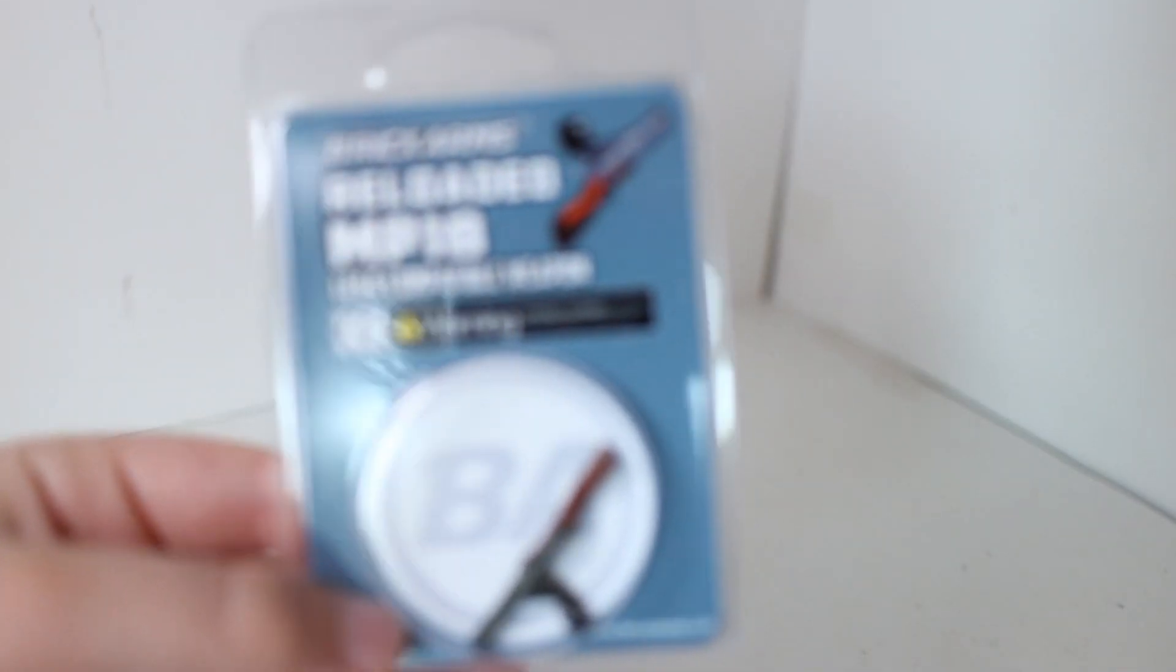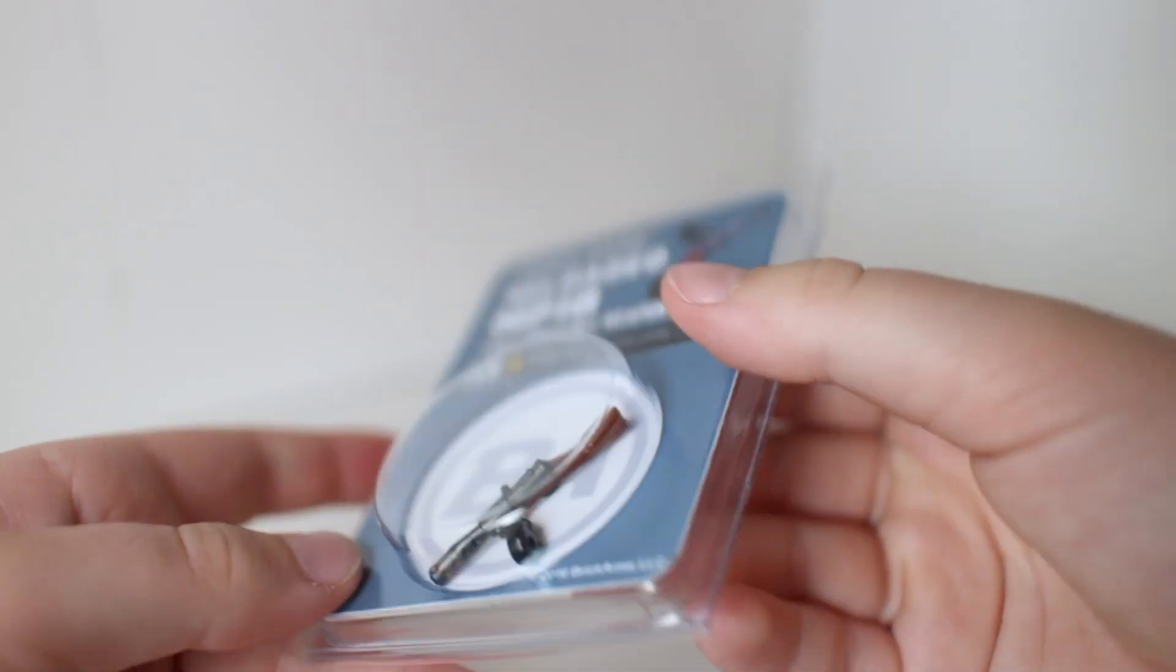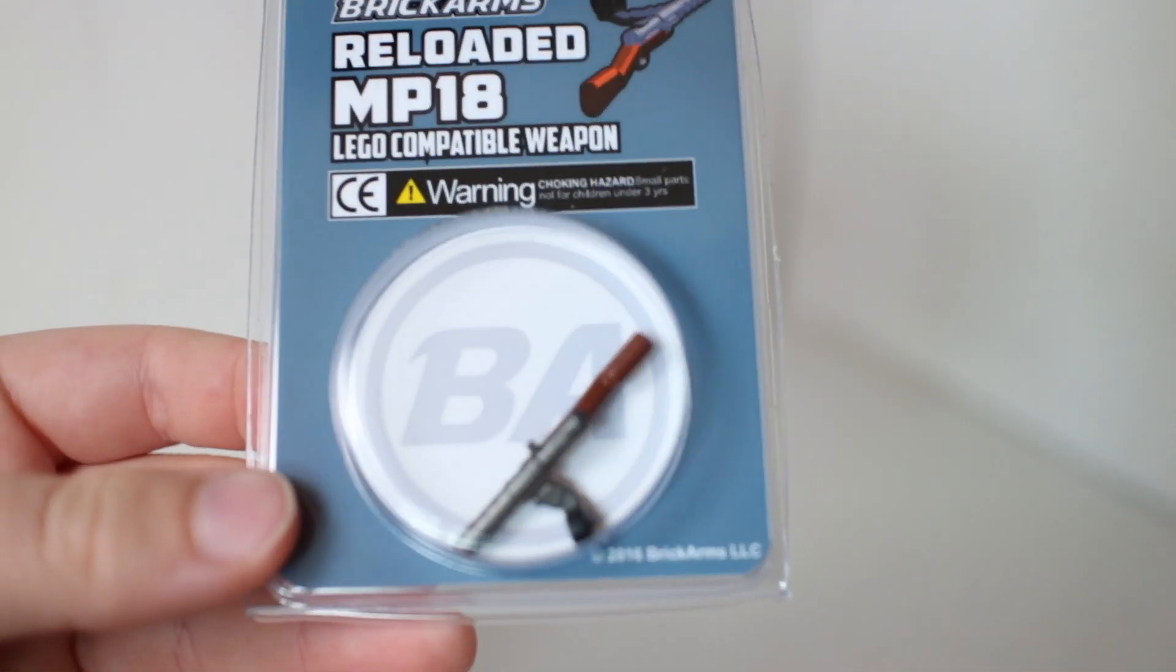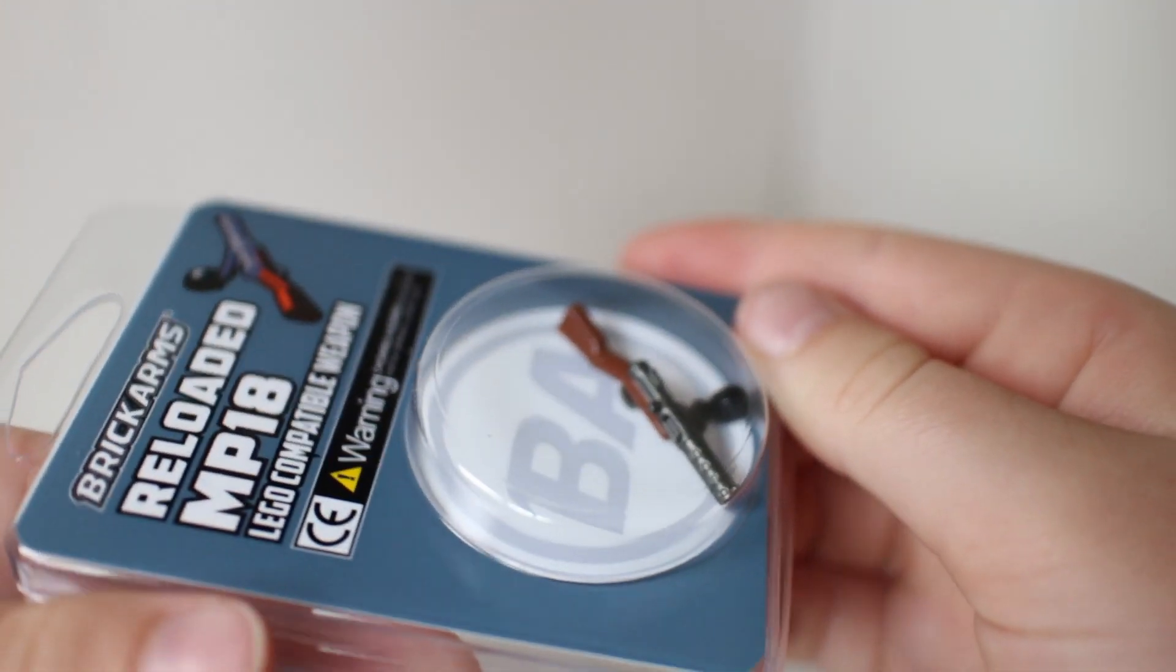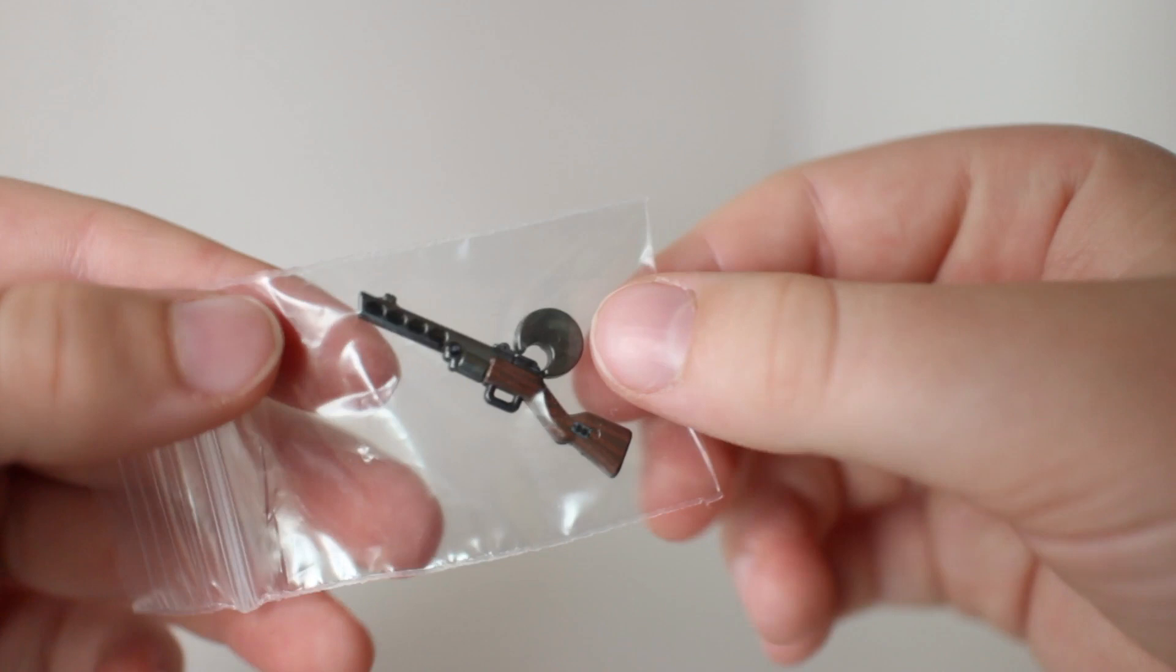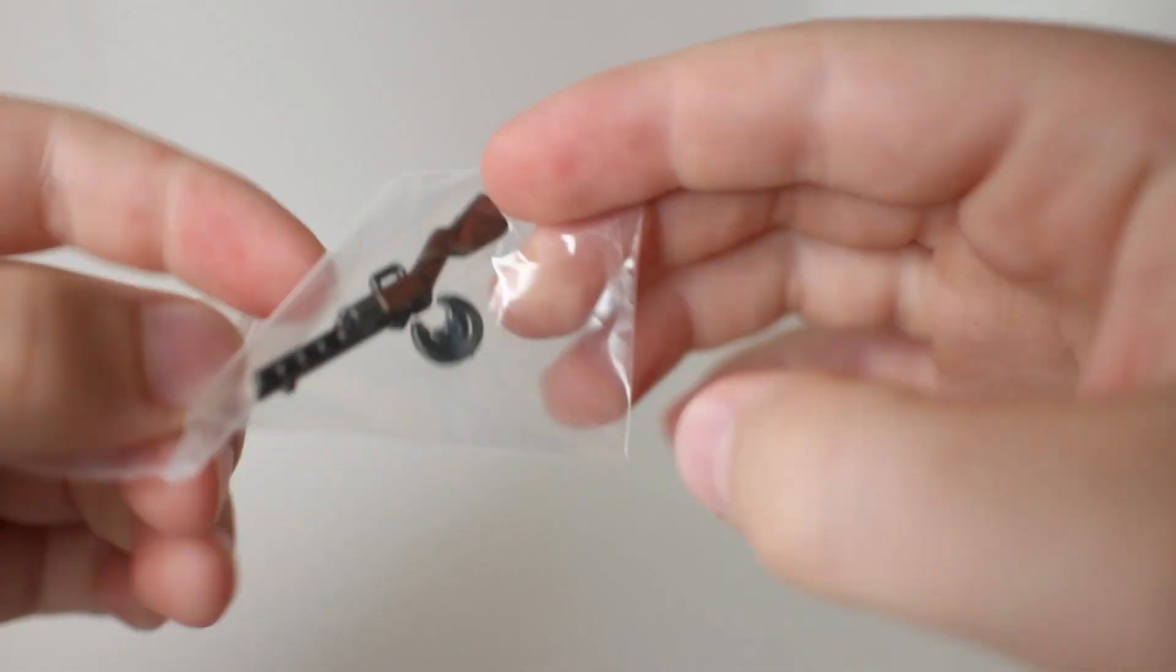The first thing I got is this brick arms over molded reloaded mp18 for my World War One figs. This is a really nice gun that I had to get. And then my brother got this perfect caliber ppsh. This is a sick gun.